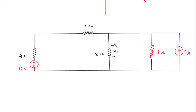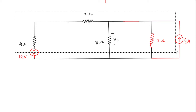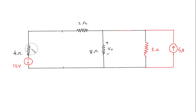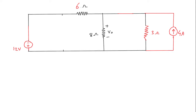Now as we can see, we can further convert this 12 volt into its equivalent current source. But before that, we have to add these two resistances, so 4 plus 2 is 6 ohm. Now we can convert this 12 volt into its equivalent current source.